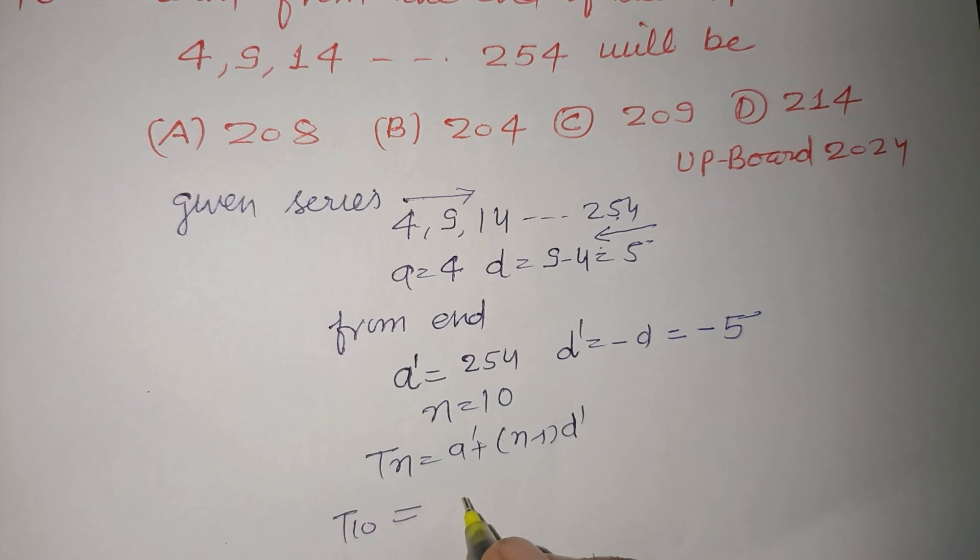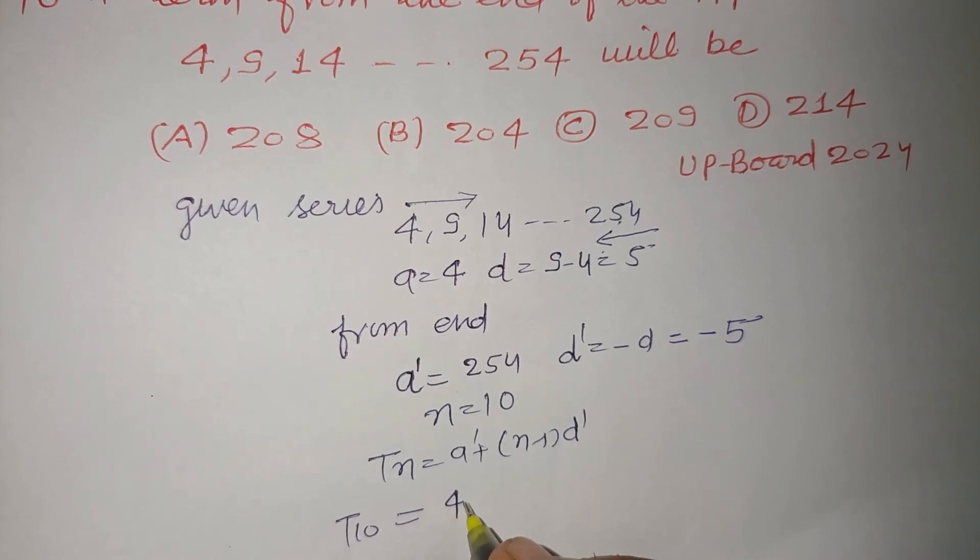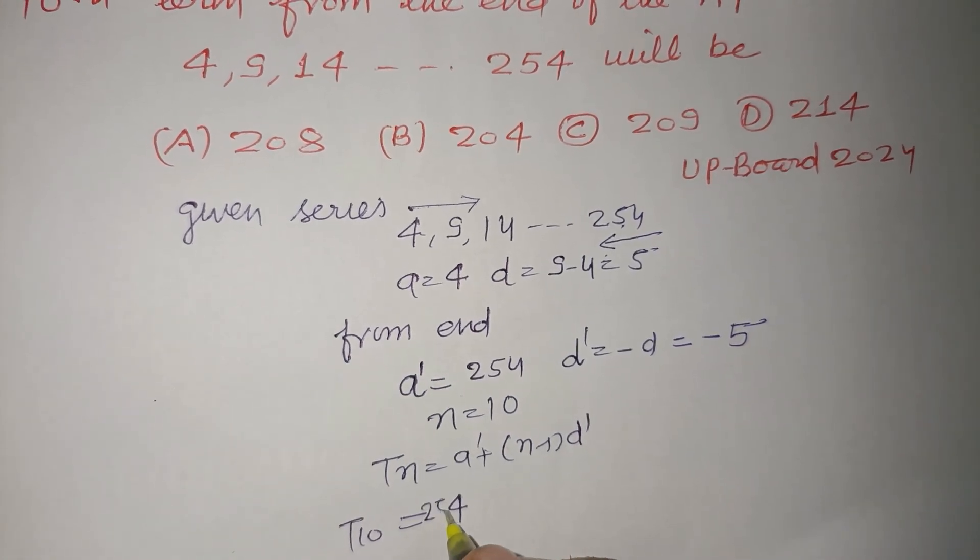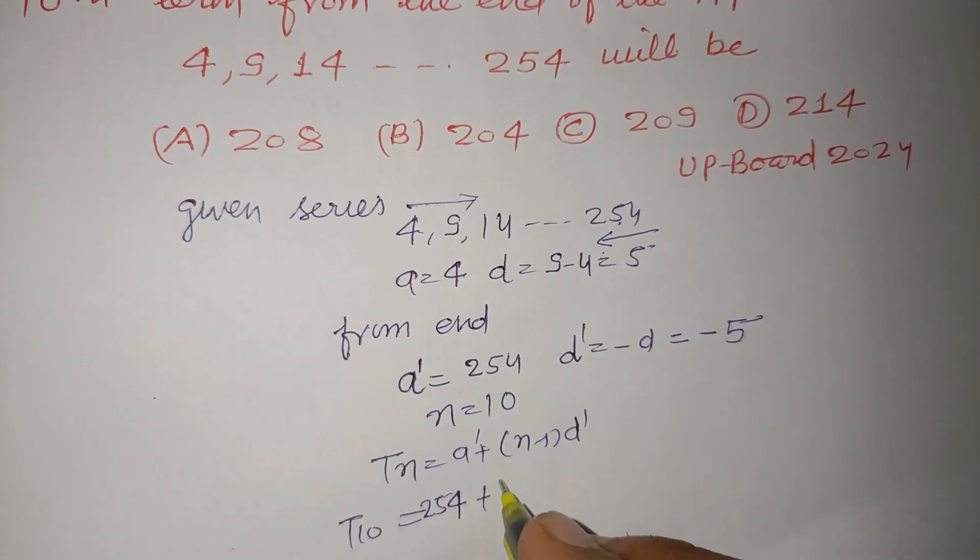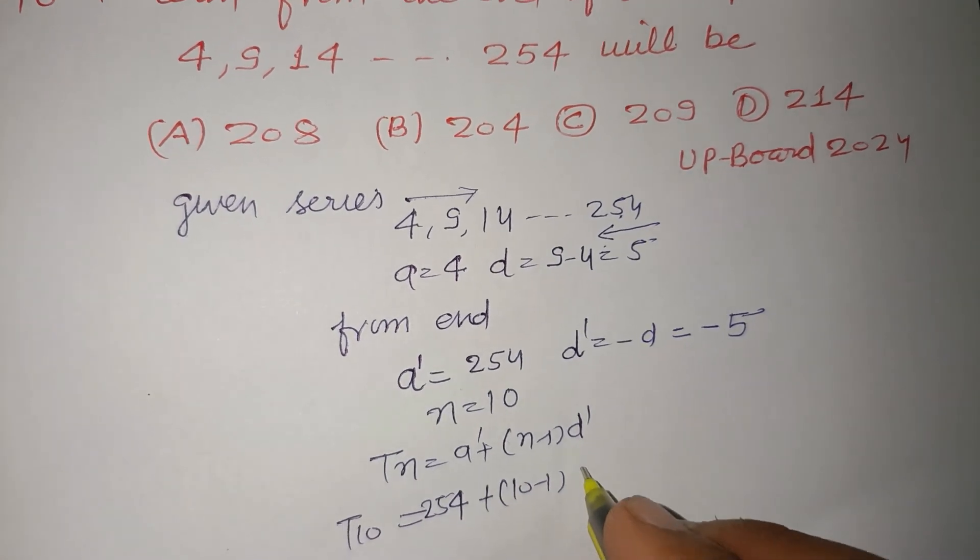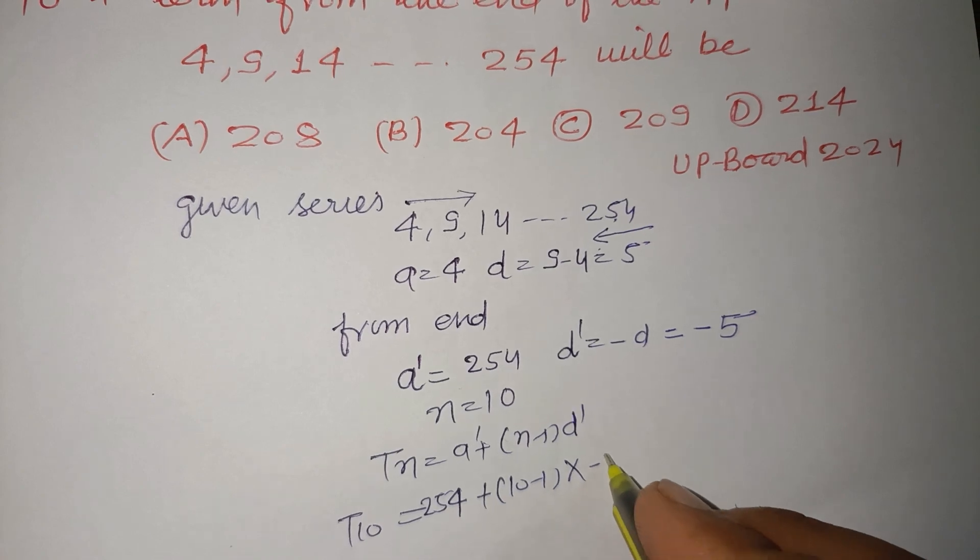Here, T10, a is 254, plus n is 10, 10 minus 1 into d dash is minus 5.